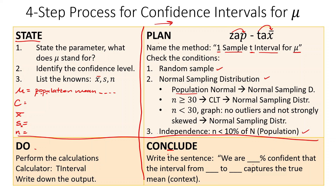The conclusion sentence will always be: 'We are [blank] percent confident that the interval from [blank] to [blank] captures the true mean [context].' You can use 'population mean' instead of 'true mean' — that's perfectly fine.